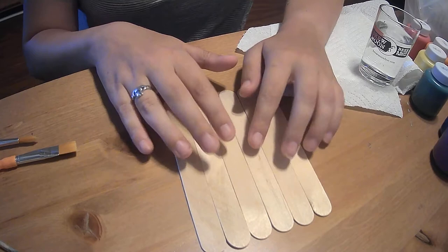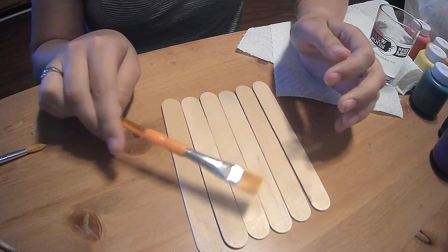The materials we'll need are six popsicle sticks - I'm using jumbo kinds. You will need some paintbrushes. I'm going to use this really big one.